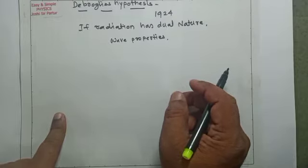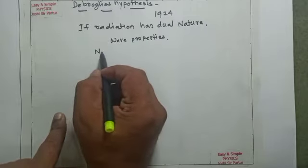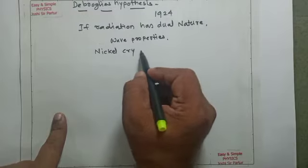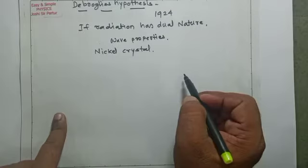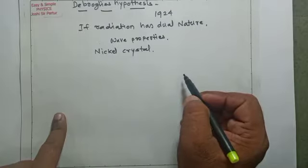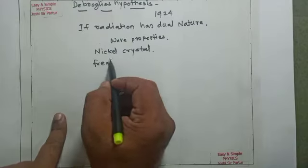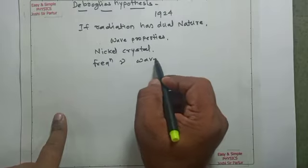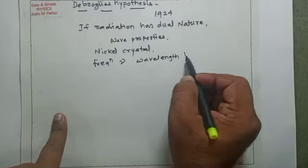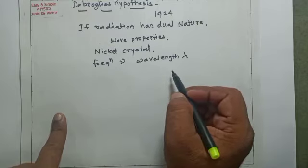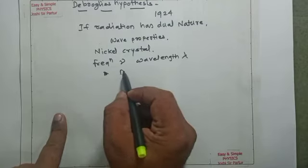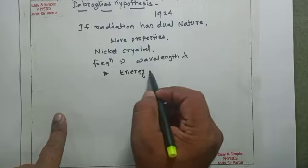This wave nature of matter is shown from the experiment on diffraction of electrons from a nickel crystal. De Broglie used properties of frequency — if the frequency of incident radiation is nu and the wavelength of incident light is lambda, then we can propose a relation between energy and momentum.